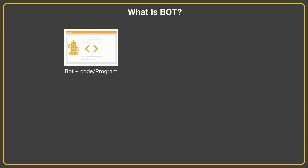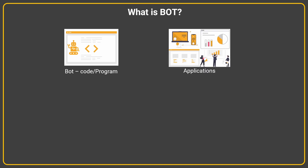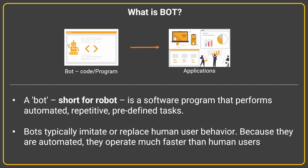A bot is a code or a program which is a collection of tasks, rules, keyboard or mouse actions, or navigation items that interacts with applications just like a human does. In short, a bot — short for robot — is a software program that performs automated, repeated, predefined tasks. It typically imitates or replaces human user behavior, and because they are automated they operate much faster than human users.